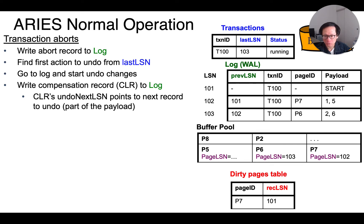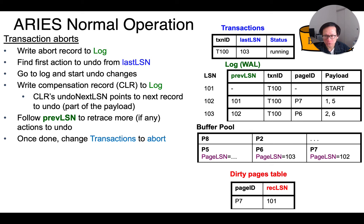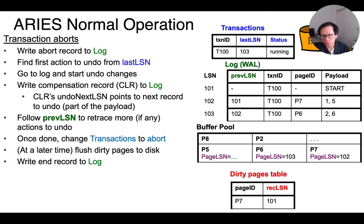After the CLR is written, we go back to the log and retrace using the previous LSN field and see if there are any more actions to be undone. Once that is done, we change the transaction status to abort. Then we flush the dirty data pages due to restoration of the previous values to the disk at some point. Then we write the end record to the log and set transaction status to be complete when all that is done.